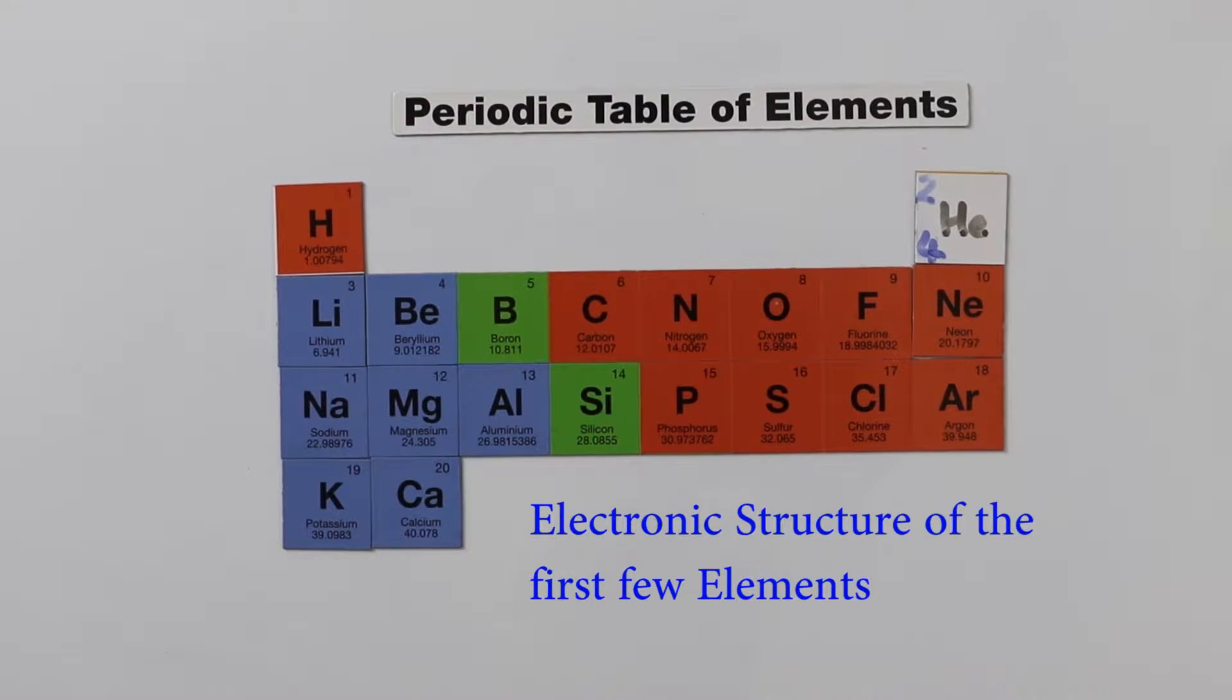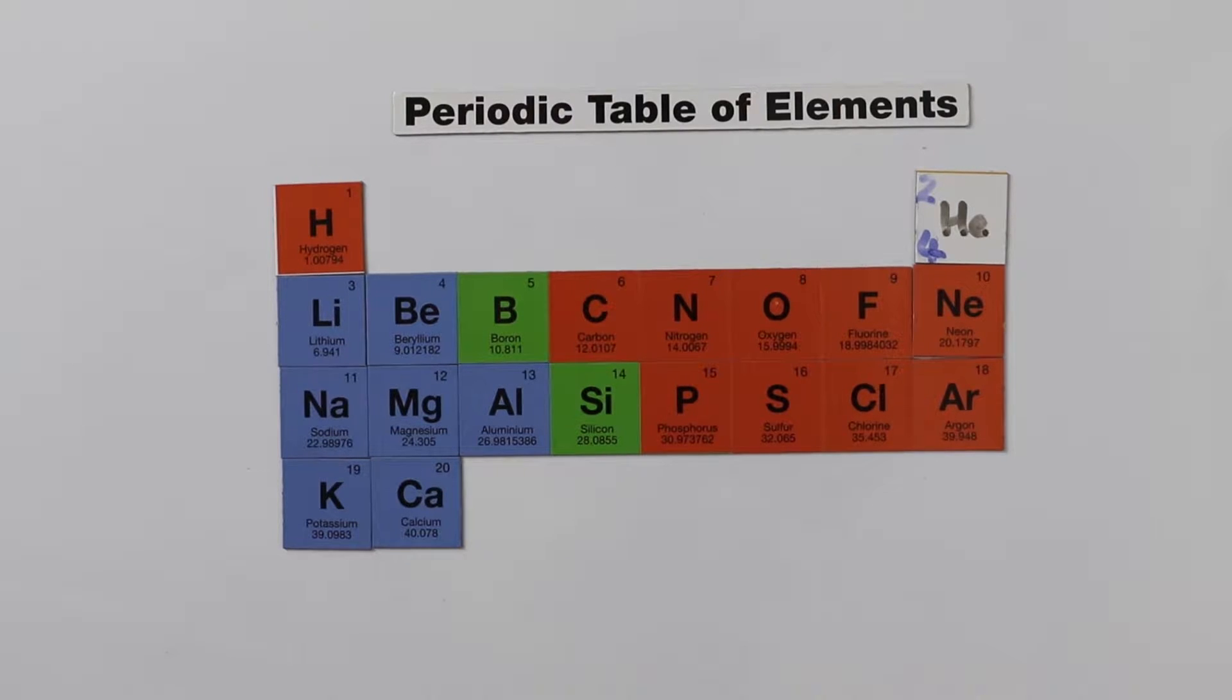The electronic structure of the first few elements. Atoms have two basic parts that are looked at in chemistry.